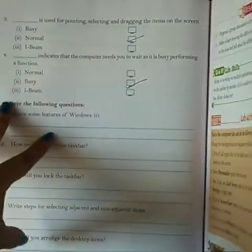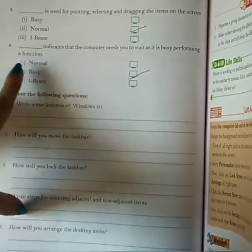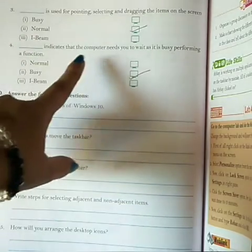Now, these are your last two. Take the correct dash. Dash is used for pointing, selecting, and writing the item normal. Dash indicates the computer needs you to wait as it is busy performing a function.